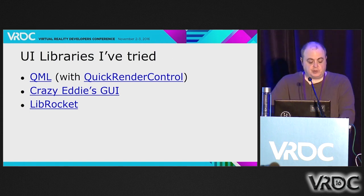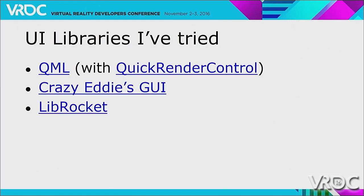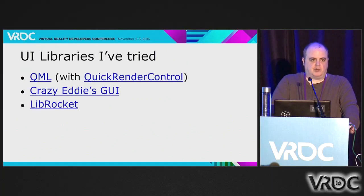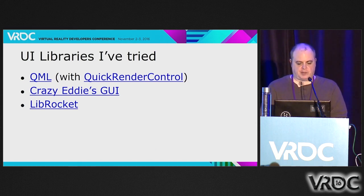The UI libraries I've worked with: I've mostly worked with QML in the past couple of years — that's part of the Qt framework. It hits all of these notes. QML is a general purpose library; in terms of rendering to an off-screen surface, it only supports OpenGL. Crazy Yeti's GUI and LibRocket are both more special purpose libraries targeted at game makers who want to build UI for their application. They're a little more limited in features, but they will both render directly to OpenGL and Direct3D.